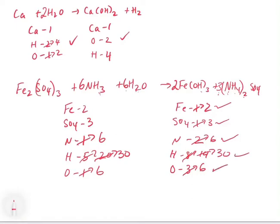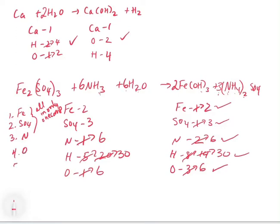To review the sequence: we balanced iron first, then sulfate, then nitrogen — all atoms that appear in only one compound on each side, and we could have done those in any order. Then we finished with oxygen and hydrogen last. Balancing the first three gets us into the right ratio areas, and then we finish off with oxygen and hydrogen.